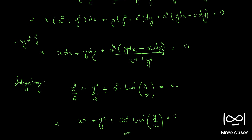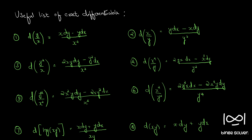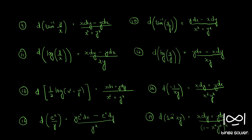This is the solution to question number 185. I'll show the list once again. Going through the list you can find very useful exact differentials that we can use to solve questions. Here we used the tenth one: tan inverse x by y equals y dx minus x dy by x square plus y square.